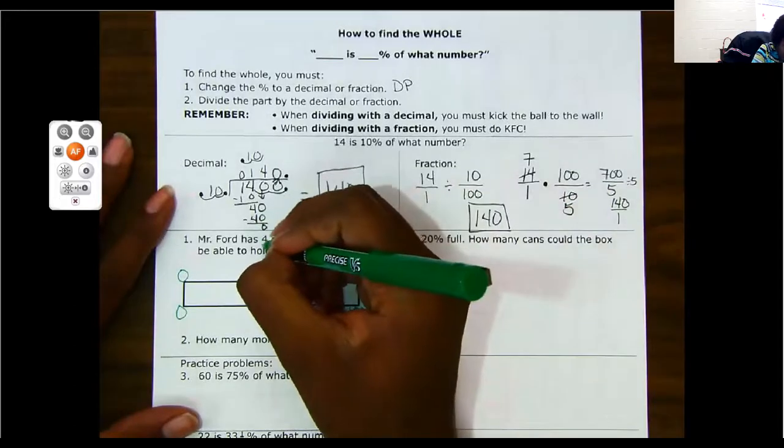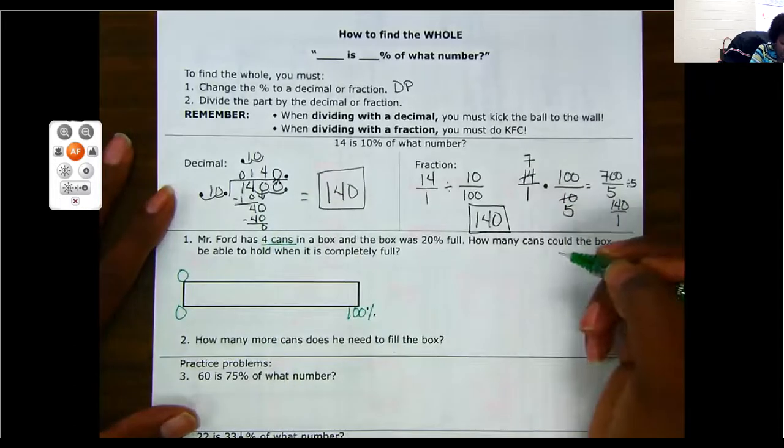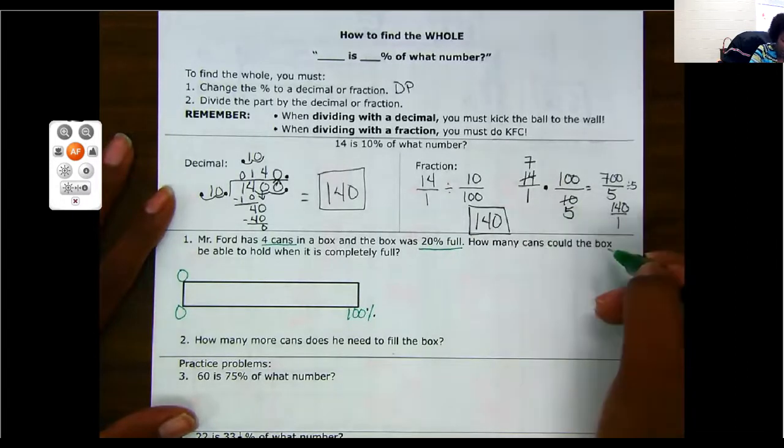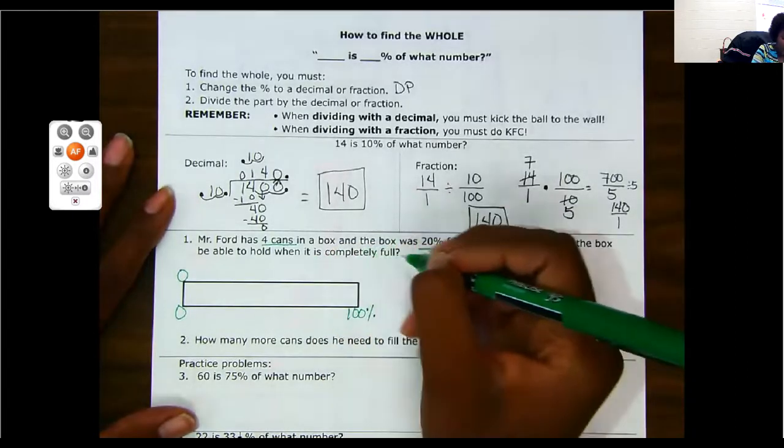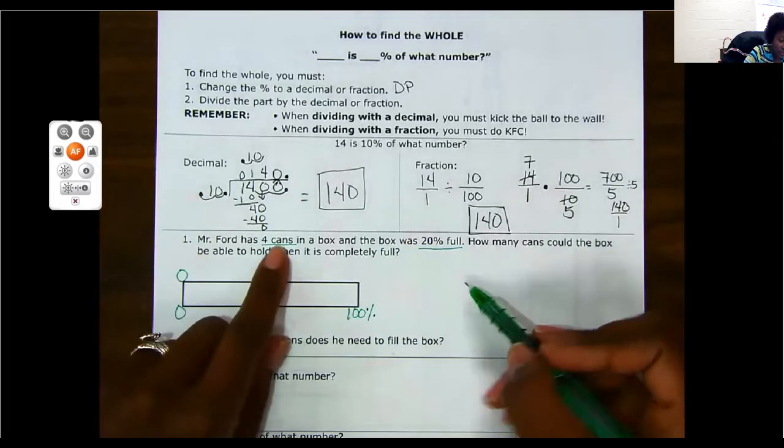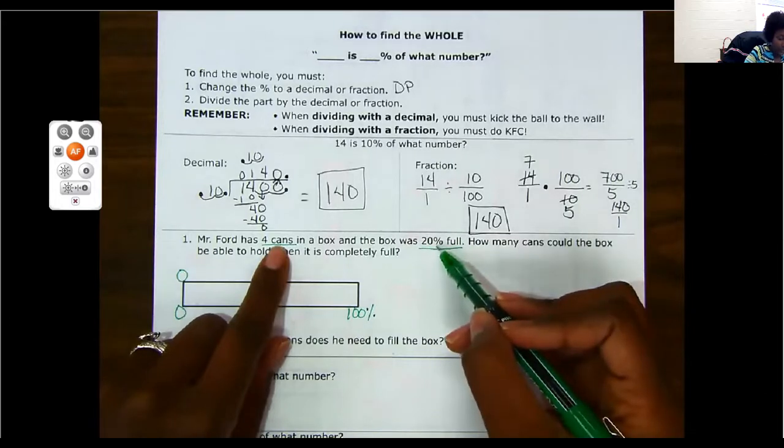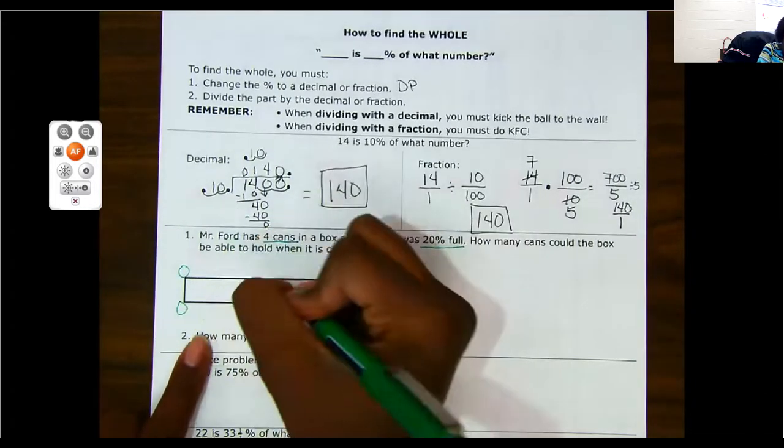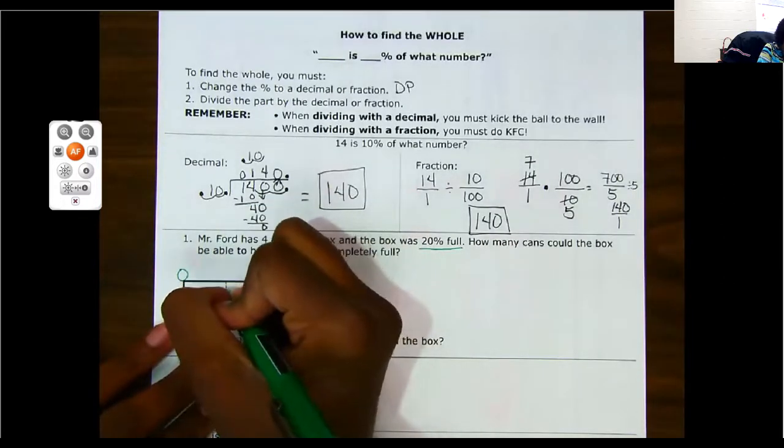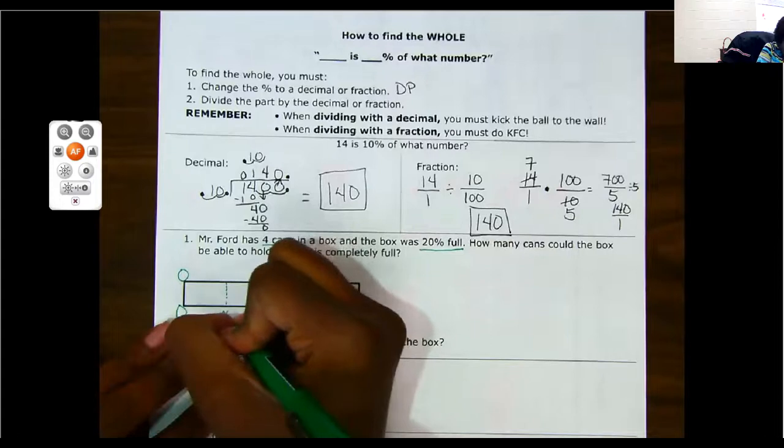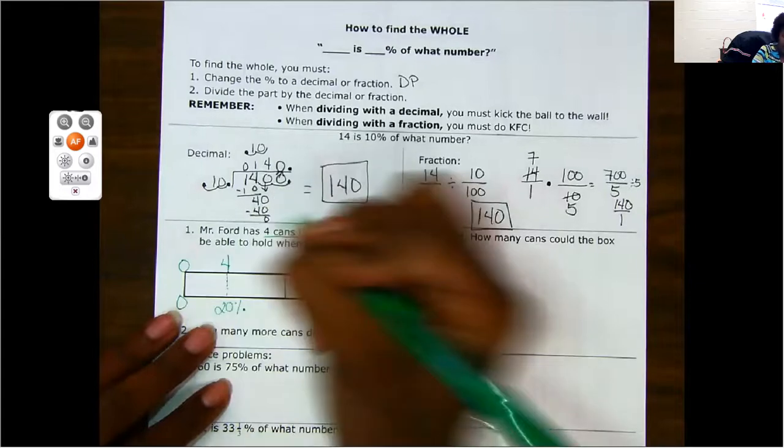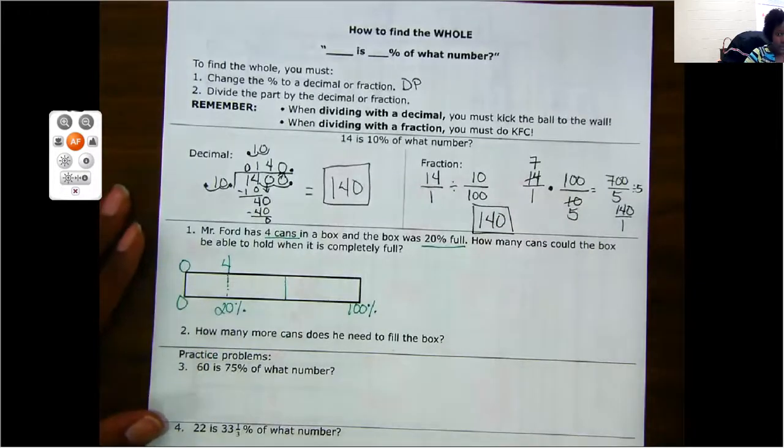Mrs. Ford has four cans in a box and the box is 20% full. How many cans can the box be able to hold if it is completely full? So they didn't give us a total. They said that these four cans represents 20% of the box. So I'm going to say this is about halfway right here. So I'm going to say, let's say 20% is about right here. We're guesstimating. Okay. And then they said that 20% represents four cans.